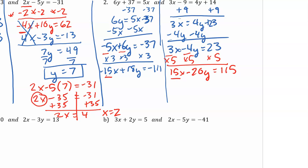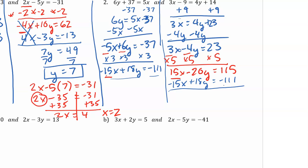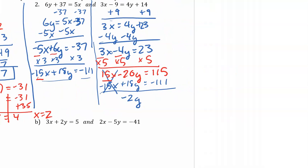Now I have something I can work with. I'm going to add the two equations together. The x's cancel each other out. Negative 20y plus 18y is negative 2y. 115 minus 111 is 4. I just want y by itself, so I'll divide both sides by negative 2. Y equals negative 2. That's half my answer.